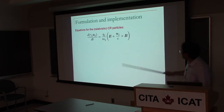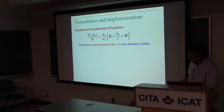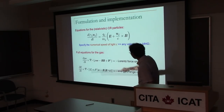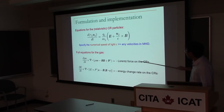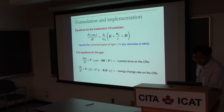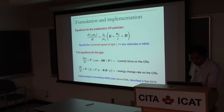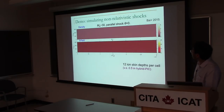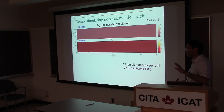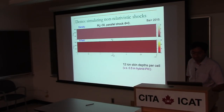The equations: particle trajectories follow the relativistic equations of motion, while MHD equations are solved with feedback terms such that total energy and total momentum are conserved. This has been implemented in the Athena-MHD code, described in my 2015 paper. The first application was to study particle acceleration in non-relativistic shocks — demonstrating the code's performance on a Mach 30 parallel shock, colliding a rapidly moving flow into a wall to launch a shock propagating to the right.